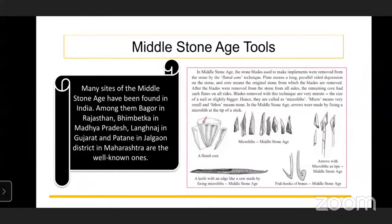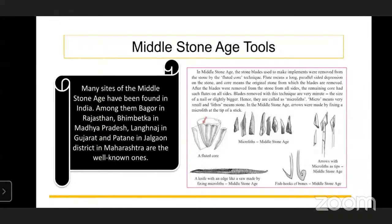In the Middle Stone Age, stone blades used to make implements were removed from the stone by the fluted core. A fluted core means: 'flute' refers to long parallel-sided depressions on the stone, and 'core' means the original stone from which the blades are removed. After removing blades from all sides, the remaining core had such flutes on all sides. The blades removed are minute - of nail size or slightly bigger - hence they are called microliths. 'Micro' means very small and 'lithos' means stone.